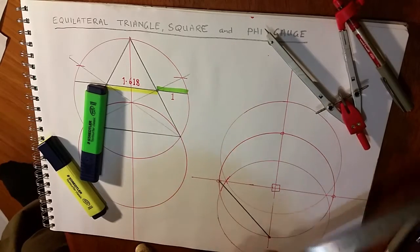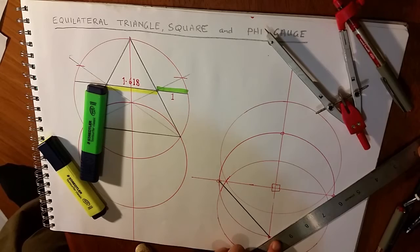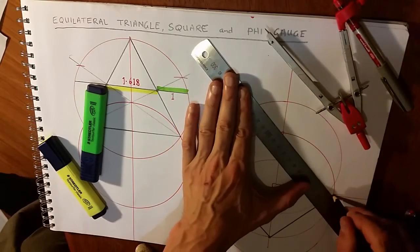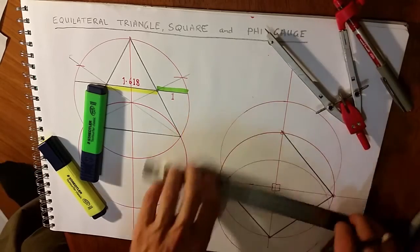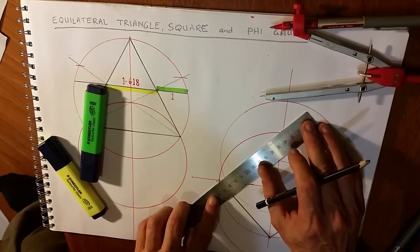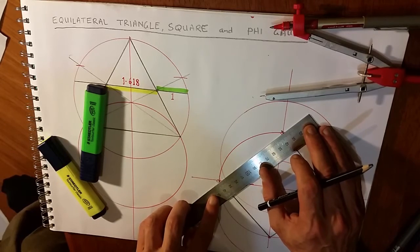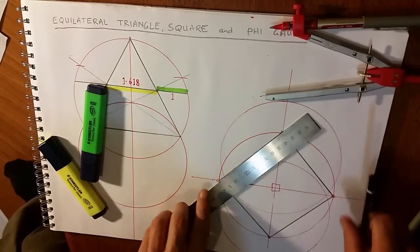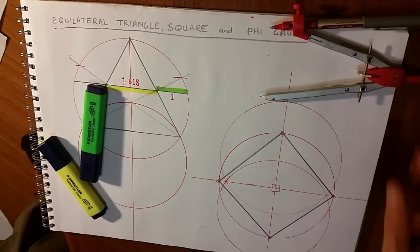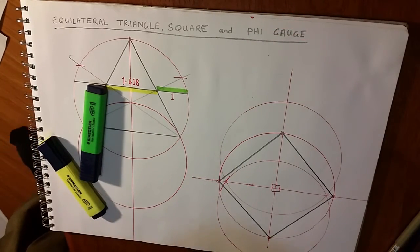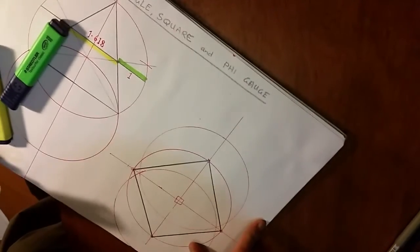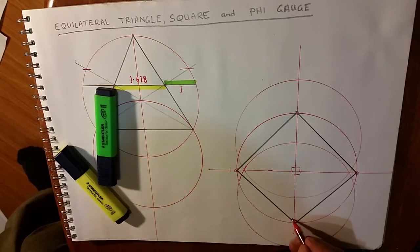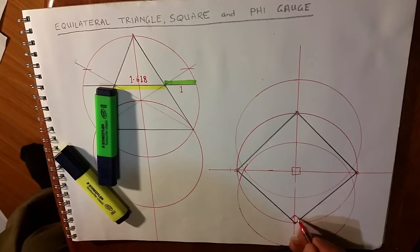So now we've created a square. Now what I want to... The square is at 45 degrees. It's not another series of right angles. So we're okay now.